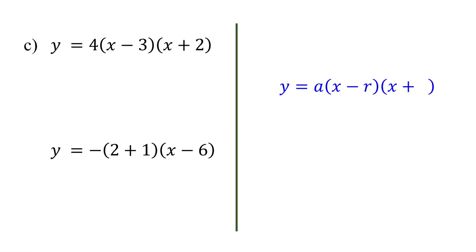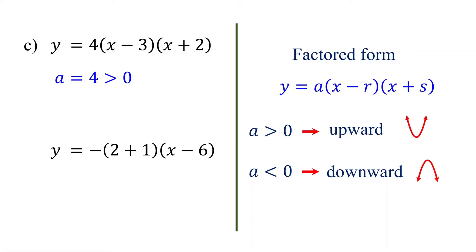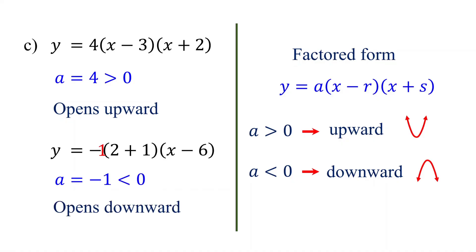When a quadratic function is given in factored form, again you need to focus on the sign of a. If a is greater than 0, the parabola opens upward. If a is less than 0, the parabola opens downward. For the first function, a is 4, which is greater than 0, so the parabola opens upward. For the second function, a is negative 1, which is less than 0, so the parabola opens downward.